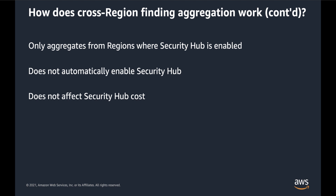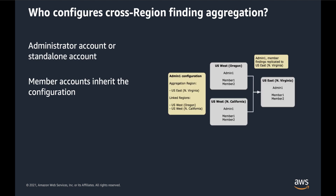Security Hub is not enabled automatically based on the finding aggregation configuration. Finding aggregation does not affect the cost of Security Hub. Cross-region finding aggregation is configured by administrator accounts and standalone accounts. Member accounts inherit the configuration from their administrator account.